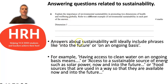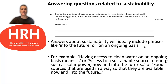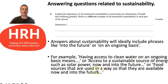Ideally, when you're answering a question about sustainability, you'll include phrases such as 'into the future' or 'on an ongoing basis,' because that demonstrates to your teacher or the exam marker that you understand the examples you're giving are referencing sustainability — meaning the present needs, but also the future needs of people. For example, you might refer to having access to clean water on an ongoing basis, or access to sustainable sources of energy like solar power now and into the future, or food sources that are used in ways that they're available now and into the future — showing that you understand these examples are being used in sustainable ways.